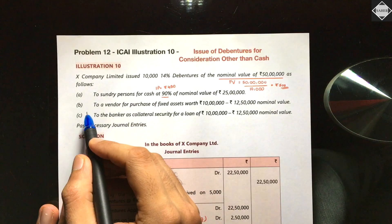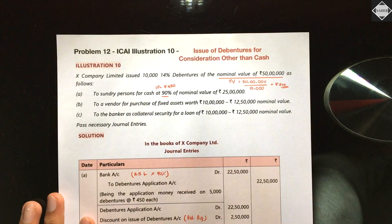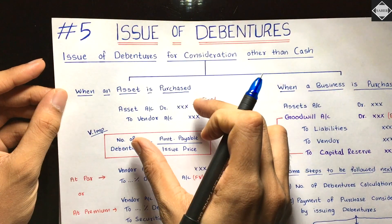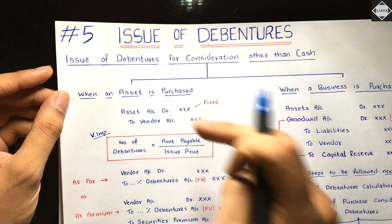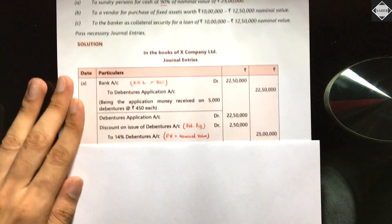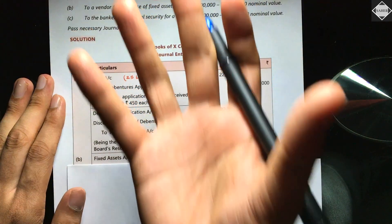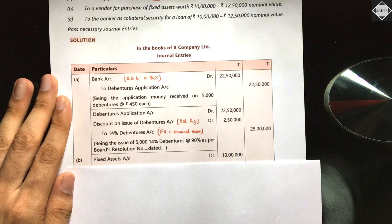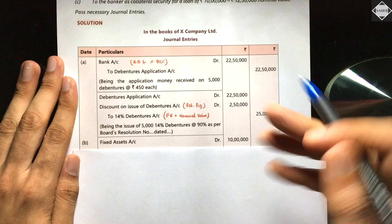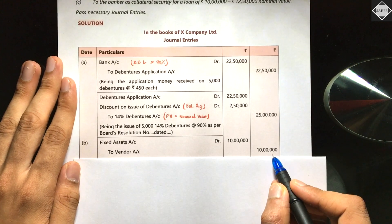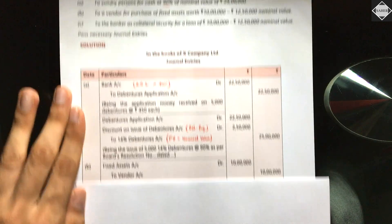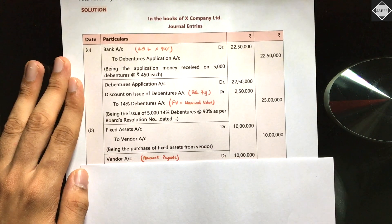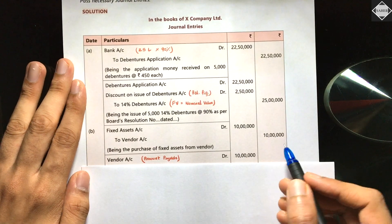Transaction B: Debentures issued to a vendor for purchase of fixed assets worth 10 lakhs. First entry: Fixed Assets Account debit 10 lakhs — to Vendor Account 10 lakhs. The asset increases so we debit it, and we recognize a liability to the vendor. Second entry: we issue debentures to that vendor, so we debit Vendor Account to settle the liability.